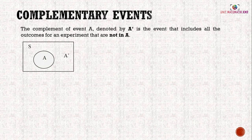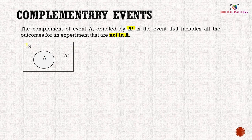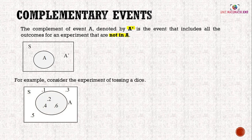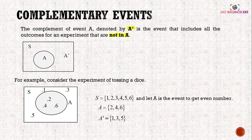Complementary events: the complement of event A, denoted A', is the event that includes all outcomes for an experiment that are not in A. In the Venn diagram, S is the sample space, A is a subset of S inside the circle, and A' is everything outside the circle. For example, when rolling a die, the sample space is {1, 2, 3, 4, 5, 6}. Let A be the event to get an even number, so A = {2, 4, 6}, and A' = {1, 3, 5}.